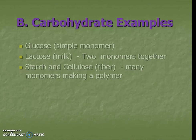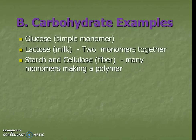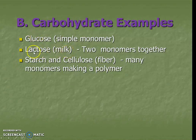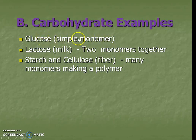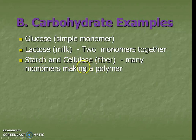Carbohydrate examples can include things like sugar and glucose. Things like milk are going to have a special type of sugar called lactose. That specifically is two different building blocks or monomers put together, versus glucose, which is just one single monomer. Other things are like starch and cellulose — those are big, big molecules. These are polymers — many, many monomers put together.